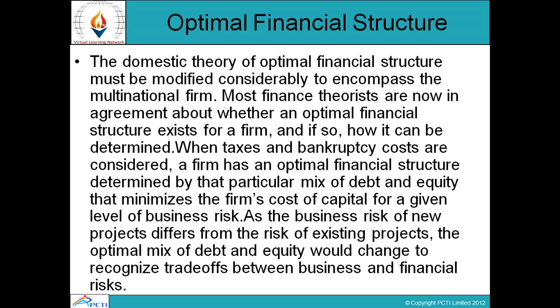Optimal financial structure must be modified considerably to encompass the multinational firm. Most finance theorists are now in agreement about whether an optimal financial structure exists for a firm, and if so, how it can be determined. When taxes and bankruptcy costs are considered, a firm has an optimal financial structure determined by that particular mix of debt and equity that minimizes the firm's cost of capital for a given level of business risk.